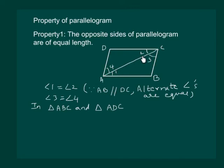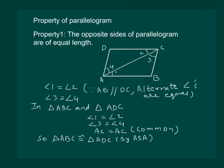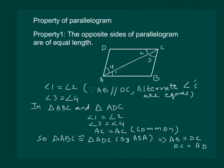AC is a common side for both triangles, so both triangles are congruent by the Angle-Side-Angle (ASA) property. This implies that AB is equal to DC and BC is equal to AD. Hence it is proved that opposite sides of a parallelogram are equal.